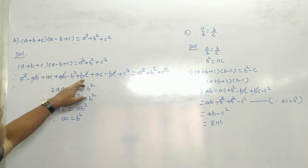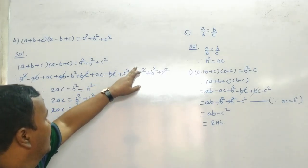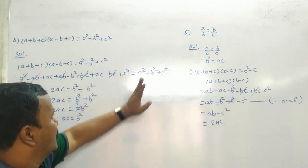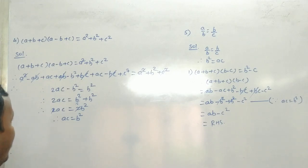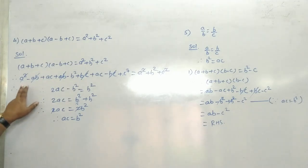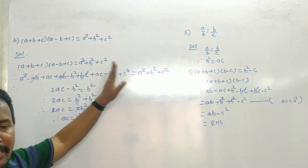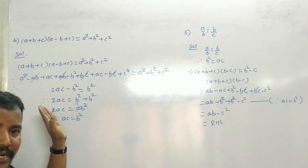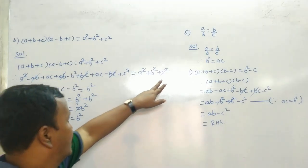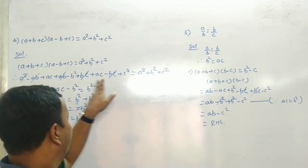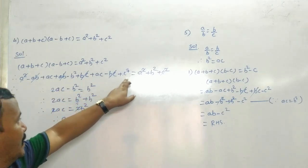फिर C से: C into A = AC, C into minus B = minus BC, C into C = plus C square. यह equal to A square plus B square plus C square. Right? Now A square and A square cut होगा।